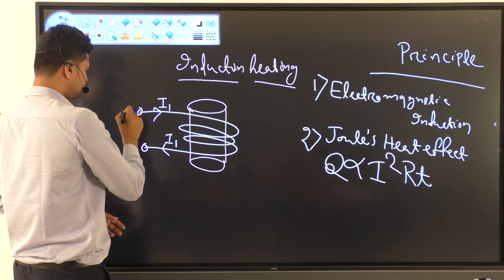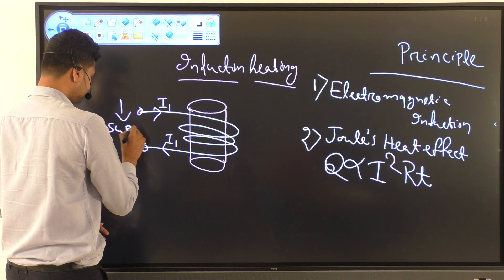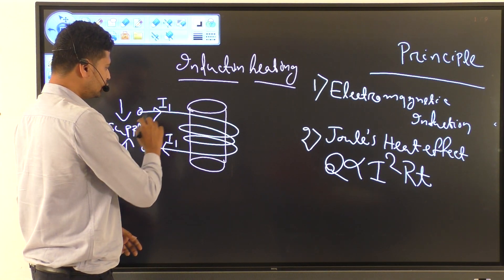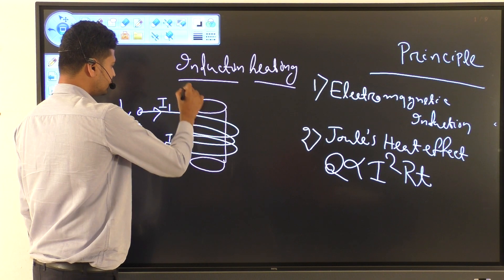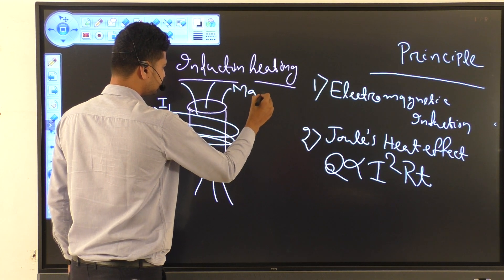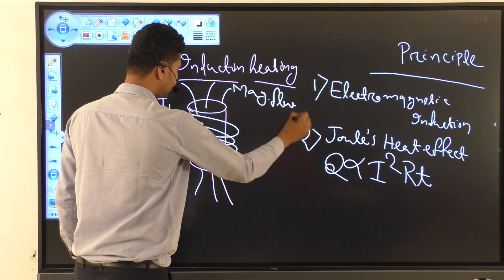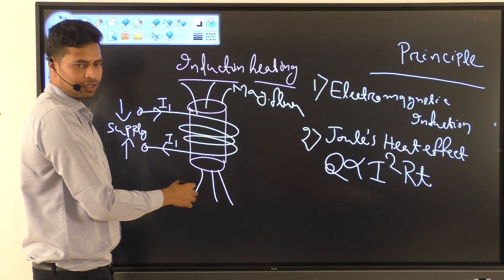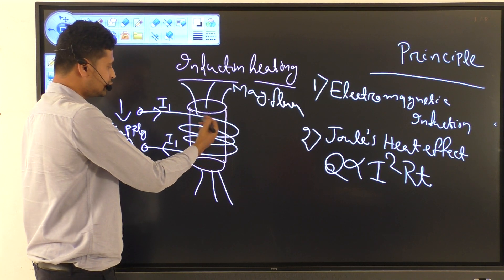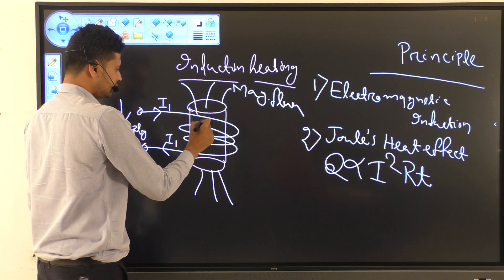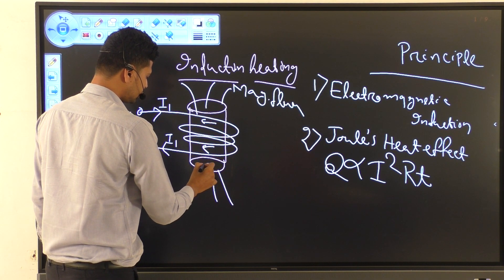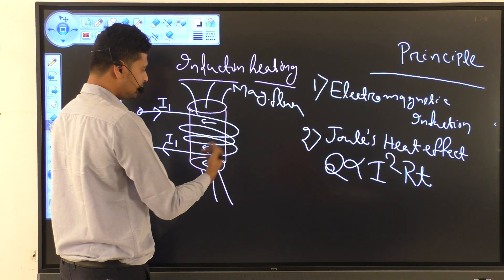The supply is given, that is our induced current, and due to the induced current the magnetic flux is created. Due to the magnetic flux, on the surface of the metal or on the secondary side, voltage is created, and this voltage leads to the eddy current. The eddy current flows on the surface of the metal, which heats the metal piece.